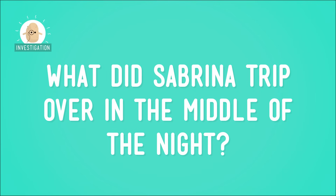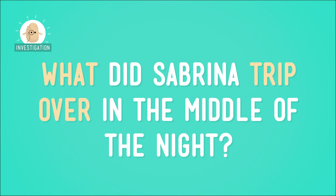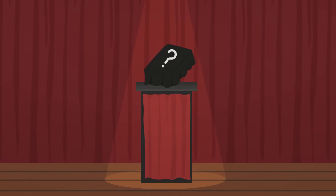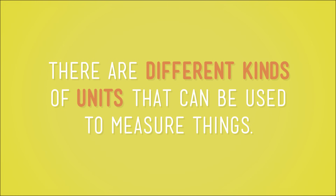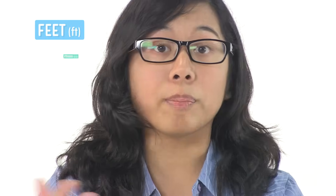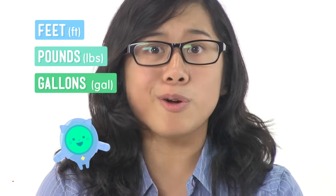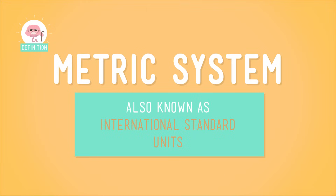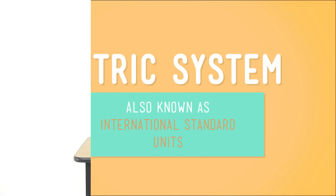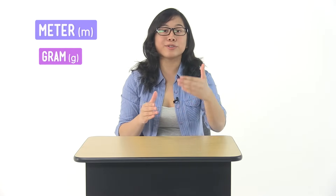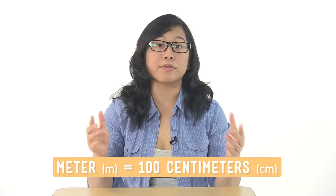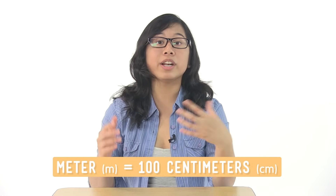So today we're going to solve the mystery of: what did Sabrina trip over in the middle of the night? And we'll do this by examining the properties of said mystery object, which I happen to have right here, hidden under the cloth. But before we start our investigation, did you know that there are different kinds of units that can be used to measure things? You can measure in feet, pounds, or gallons. But we'll use the international standard units, also known as the metric system. You might know these units as meters, grams, and liters. The markings on my measuring tape divide a meter into 100 smaller pieces of equal size. Each of these is a centimeter — one hundredth of a meter.